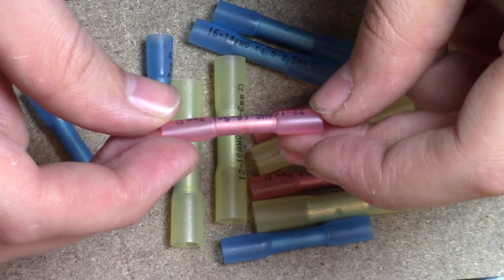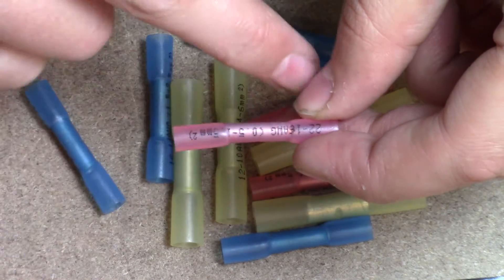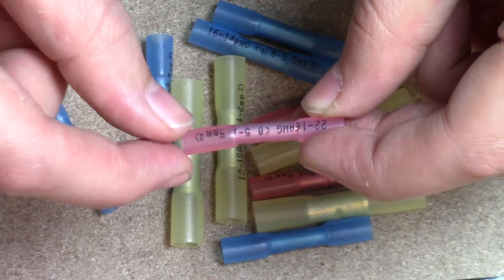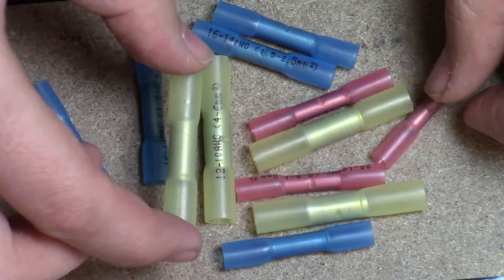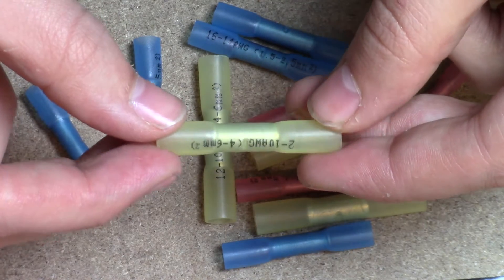As you can see, all these connectors are different colored, helping you pick the size that you need. They also have adhesive-lined insulation, and this just helps them create an environmental seal that offers protection against cable strain.